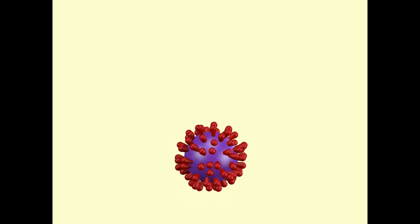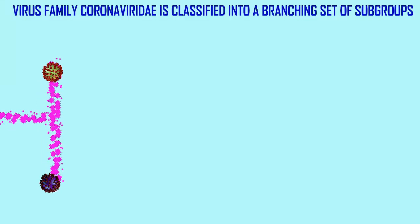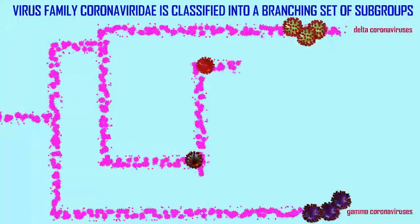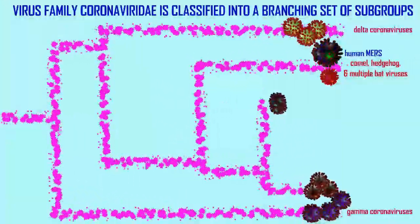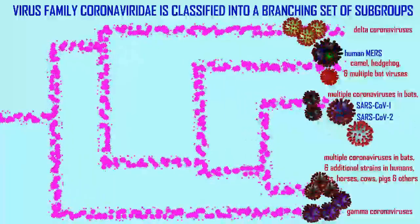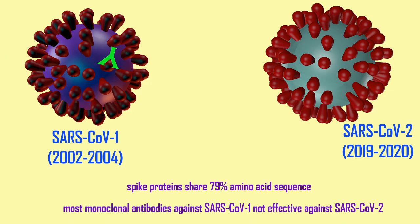Not only are the sequences of the receptors and the changes which occur over time relevant, but also those changes which occur in the spike proteins of the coronaviruses themselves, as different species of virus evolve within the family. For example, when comparing SARS coronavirus 1 and 2 strains, their spike proteins are only 79% homologous — so they're mostly similar, but they do vary. This is why some antibodies against SARS coronavirus 1 do not function against strain 2.